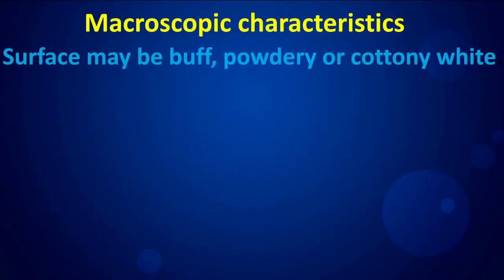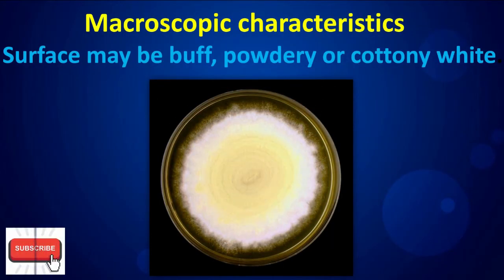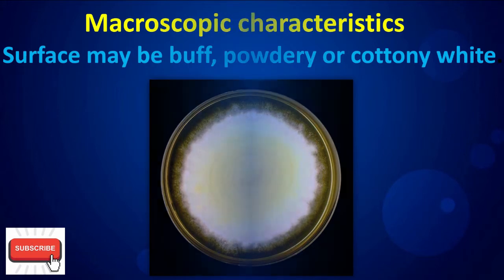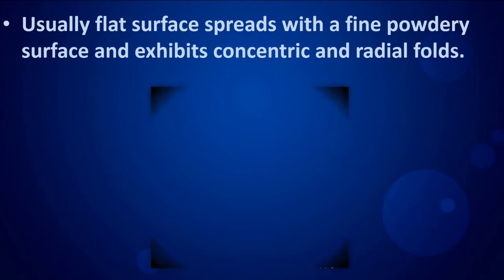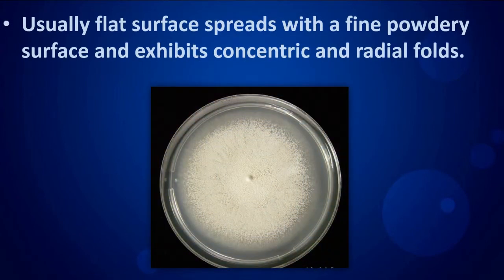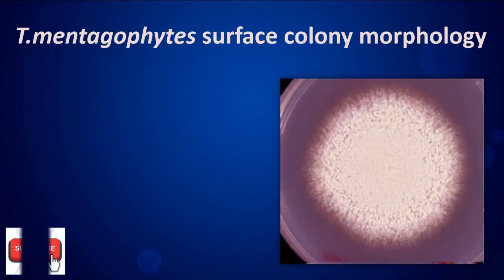Trichophyton mentagrophytes surface colony morphology: macroscopic characteristics show the surface may be buff, powdery, or cottony white, usually flat. The surface spreads with a fine powdery appearance and exhibits concentric and radial folds.